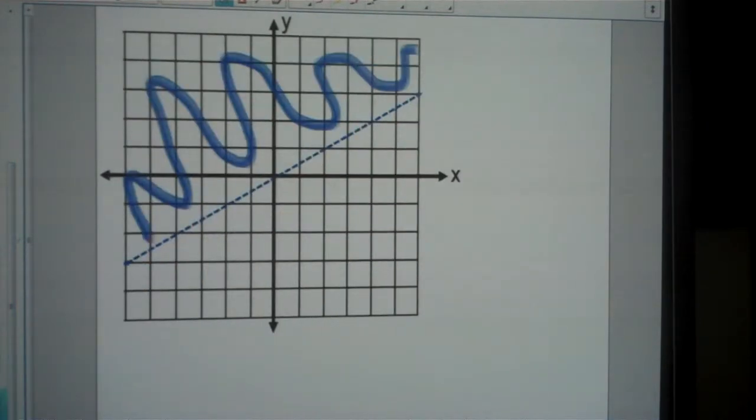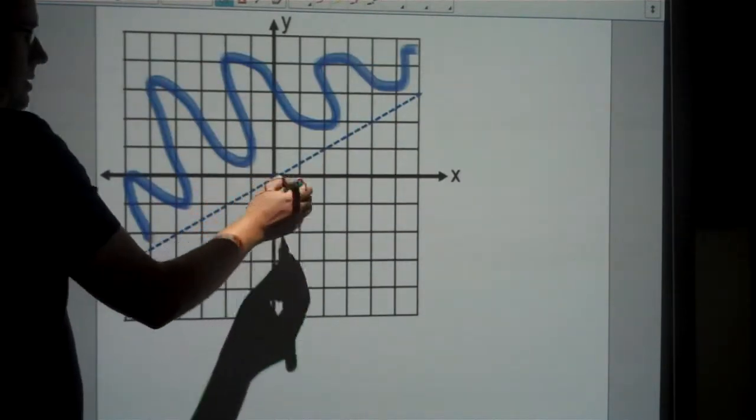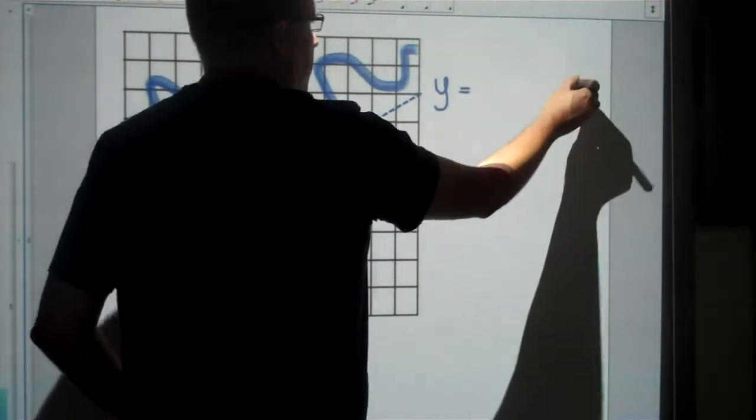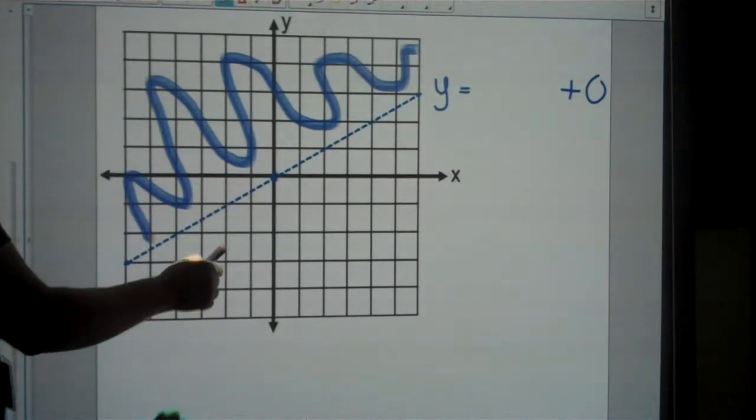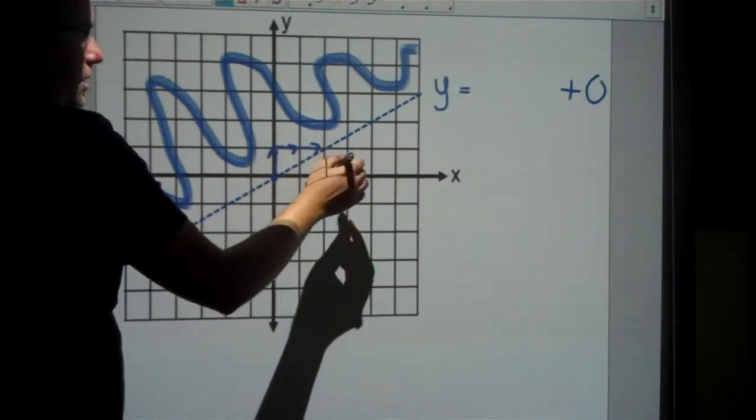For my final example, this line goes through (0, 0). So y equals something. You could put plus 0, but we don't really need that. It goes up 1 across 2, so the slope is 1/2x.